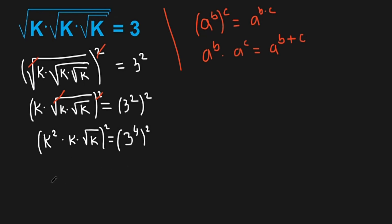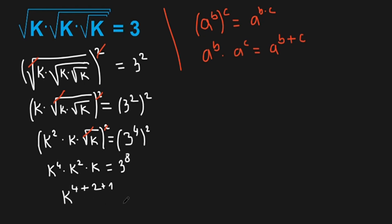We have k to the power of 4, times k squared, times — we can eliminate here — what's left is k. All this equals 3 to the power of 8. Now using the second formula we wrote before, we have k to the power of 4 plus 2 plus 1, all this equals 3 to the power of 8.